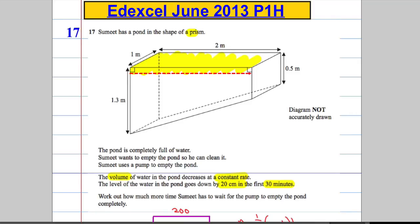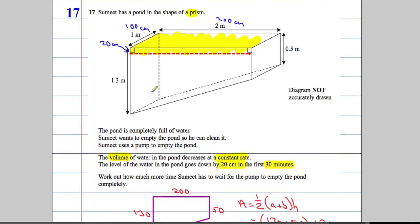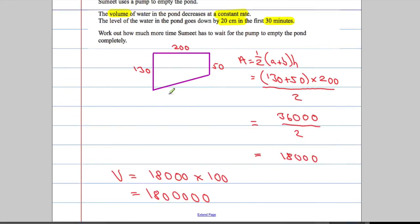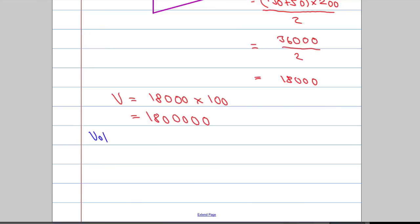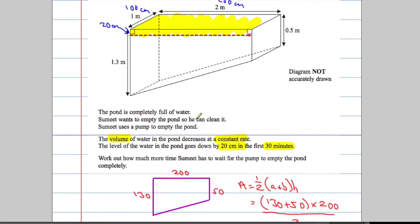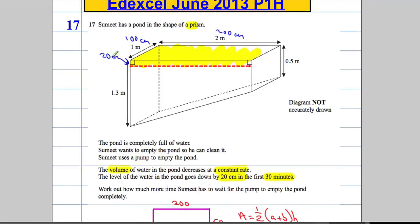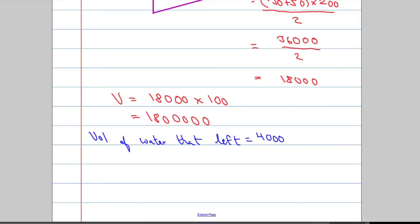If it dipped by 20 centimeters, one dimension is 20 centimeters, it goes back 100 centimeters, and it goes across 200 centimeters. So the volume of water that left is equal to 20 times 100 times 200, which gives me 400,000 cubic centimeters. That's how much water left in 30 minutes.